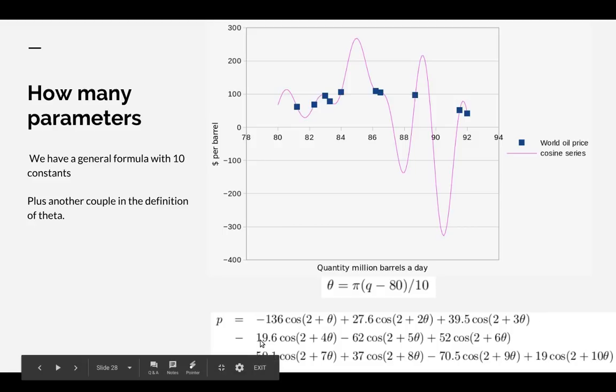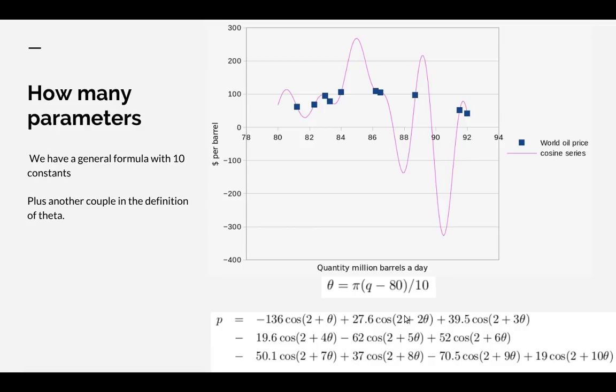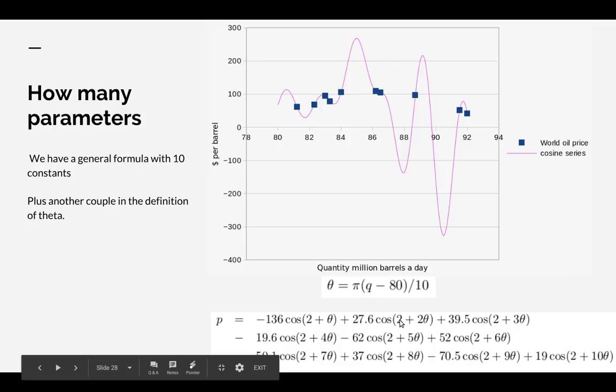Basically, I've got 10 constants: 1, 2, 3, 4, 5, 6, 7, 8, 9, 10. There are another couple in the definition of theta, so let's say 12 constants, but I've put 2s in here. Maybe we add one of them. So I've got 12 or 13 parameters in this formula.